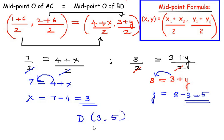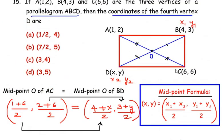So let us see if (3, 5) is in the options. So yes we have (3, 5) as option D.